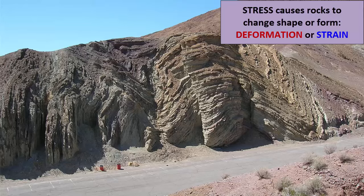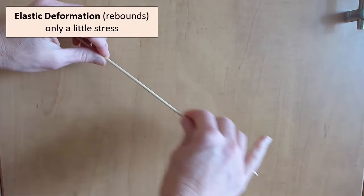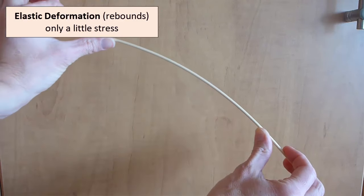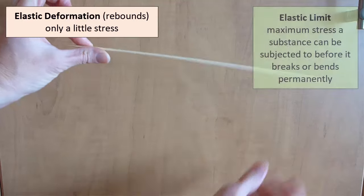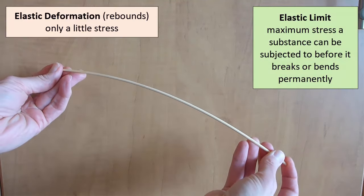Let's return to the skewer. To get elastic deformation, we have to apply only a very little pressure. Too much, and it will break or permanently bend. Each substance or rock has its own elastic limit, the amount of pressure that, if reached, means the deformation will be permanent.